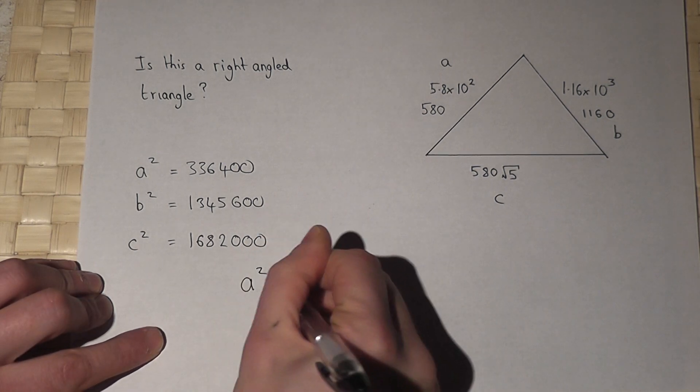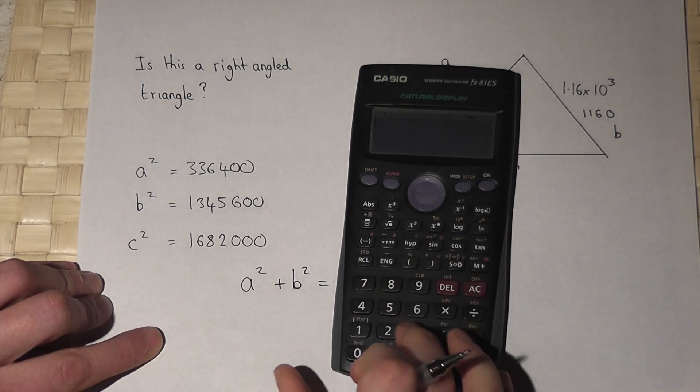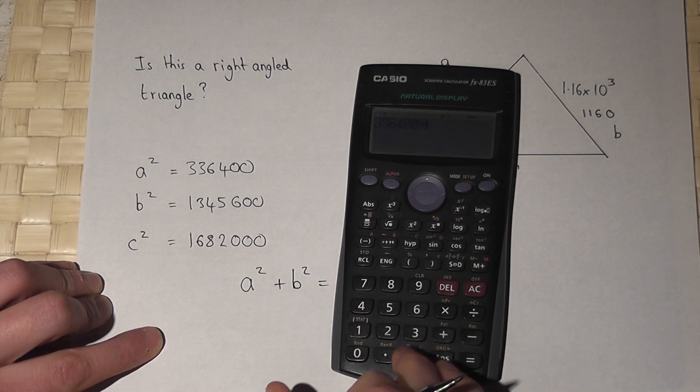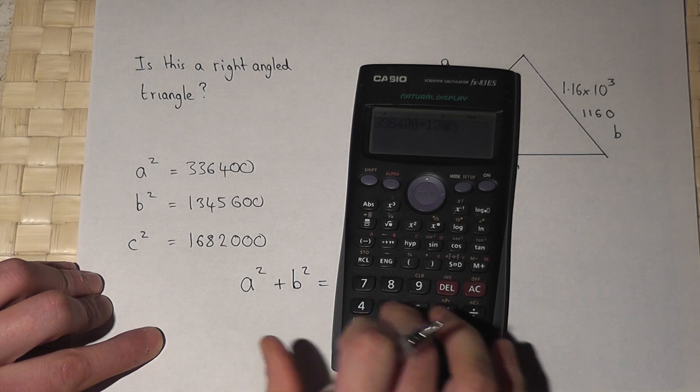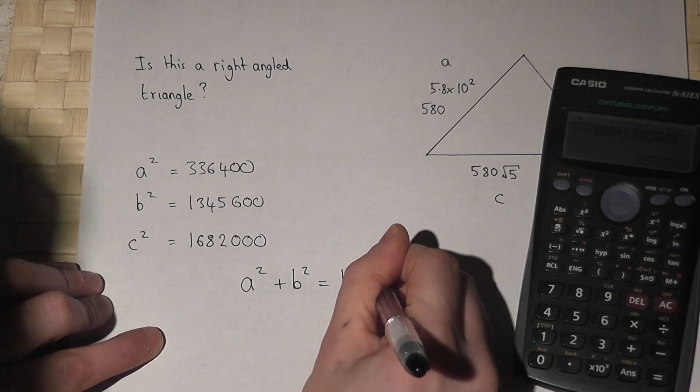because if we work out a squared plus b squared, then we get 336,400 plus 1,345,600, 1,682,000,